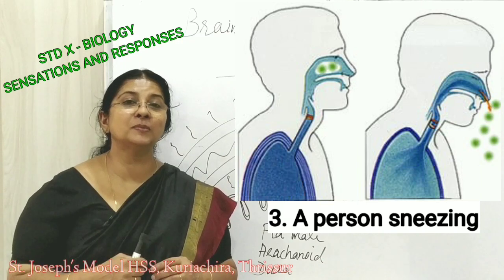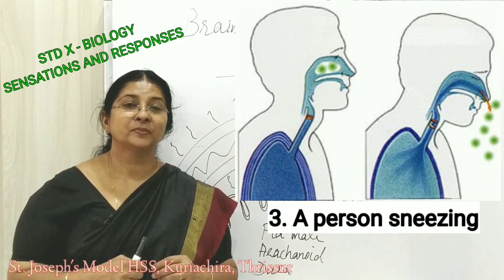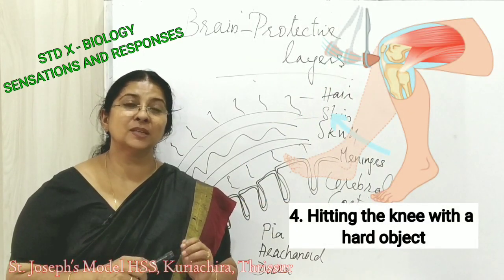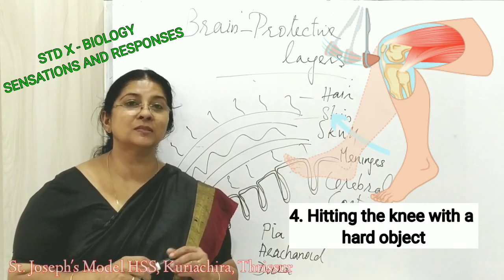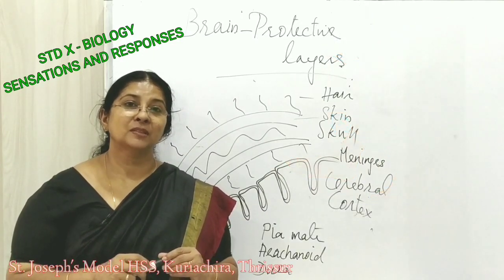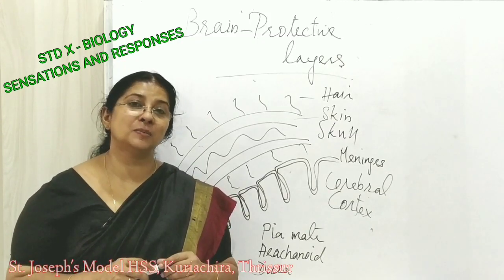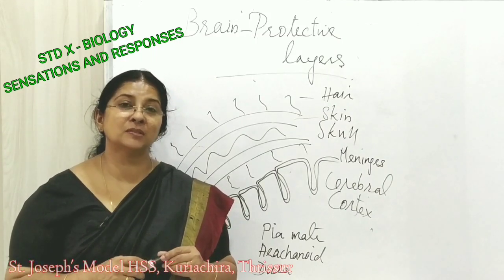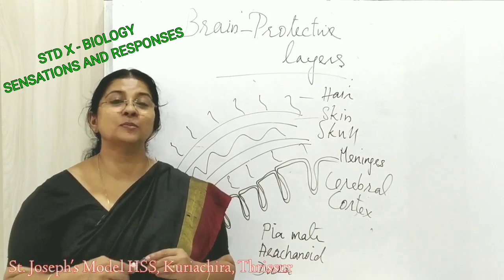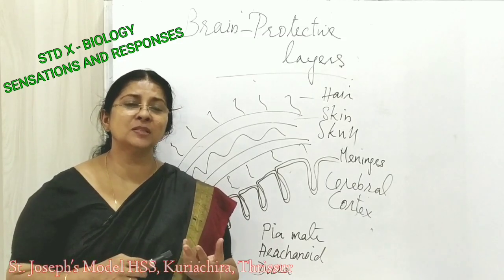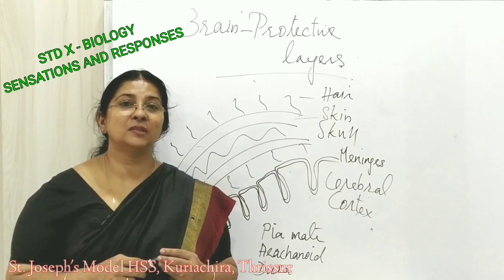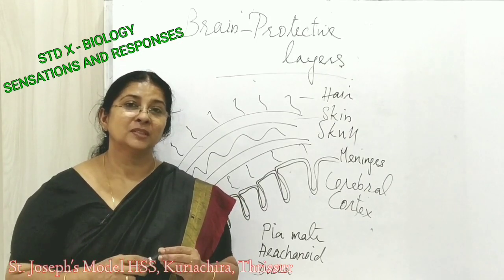What else is common in all these examples? For each stimulus there is a response. A stimulus is something that changes the environment — some change that happened in the environment. In the first example, the response is withdrawal of the hand. In the second, constriction of the pupil. In the third, sneezing. And in the fourth, removal of the leg. For each stimulus, there is a response.